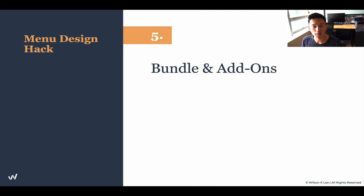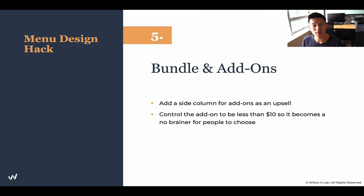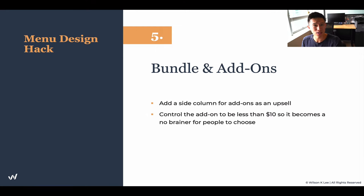Menu hack number five: bundles and add-ons. This is one of the greatest tricks there is. Adding a side-column of add-ons as an upsell is super important. This can uplift your restaurant revenue by more than 20 to 30%. When you're talking about add-ons and bundles, make sure they're below $10 — make it a no-brainer for your customers to add them on. Four or five bucks for a side of this or a side of that? Sure, let's add it in.